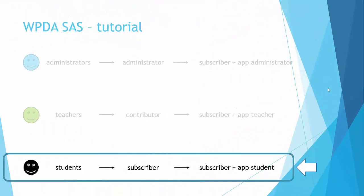Now going back to the presentation: we've been looking at the student user in the demo application. That user gets the subscriber role, and in this tutorial we have been giving the student a subscriber role and a specific app role — in our case WPDA student. But you can assign your own roles to your own data projects. Make sure that your page has the app role only and not the subscriber role. The subscriber role is only used to give the user access to the dashboard. So if you are using a shortcode, you do not have to assign the subscriber role to the student — just the WPDA student role would be sufficient.